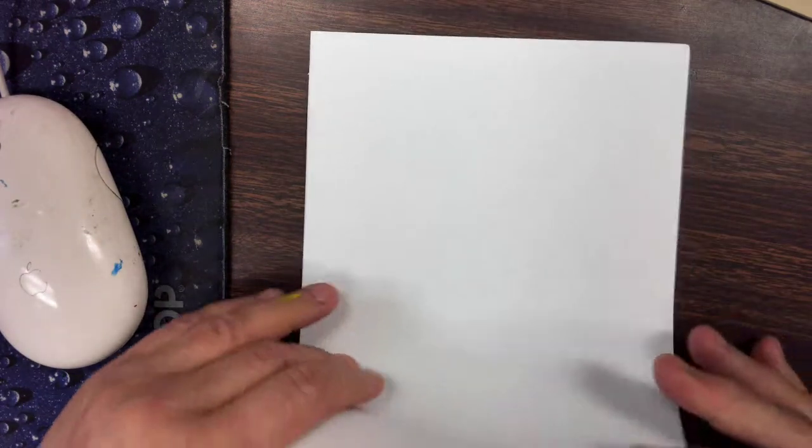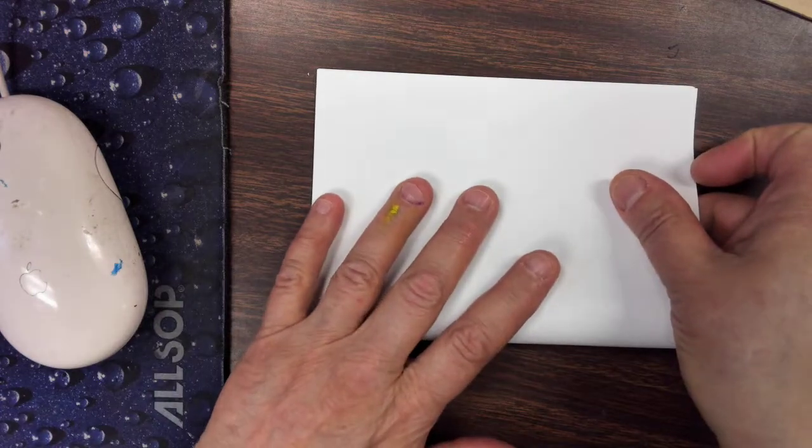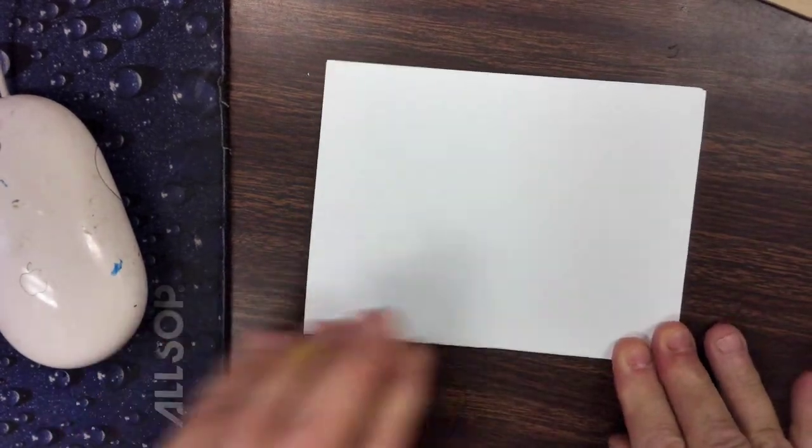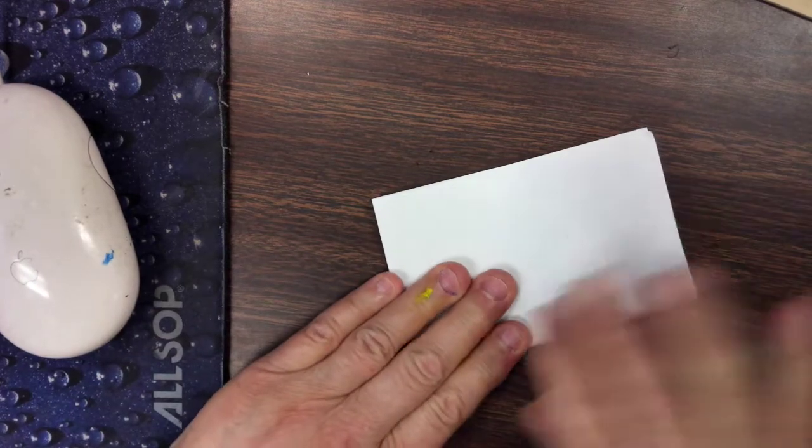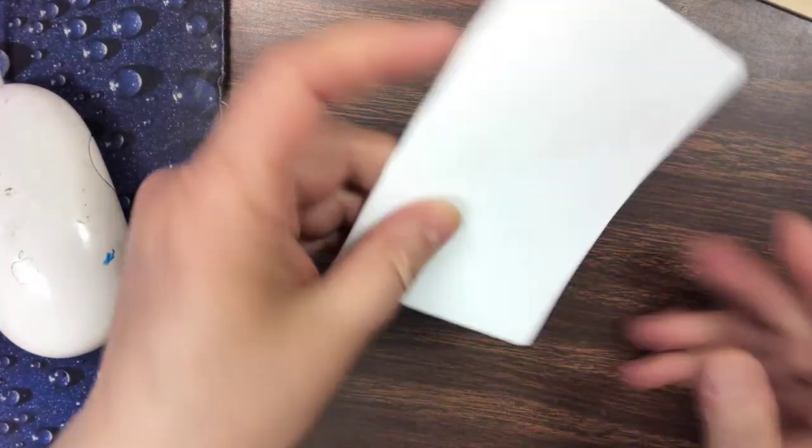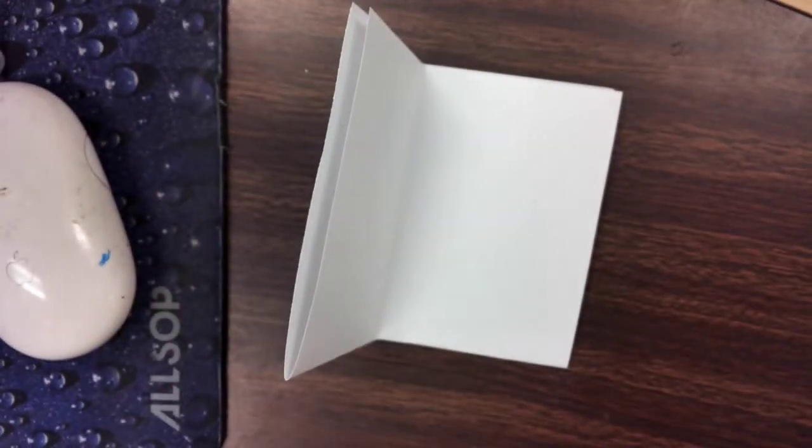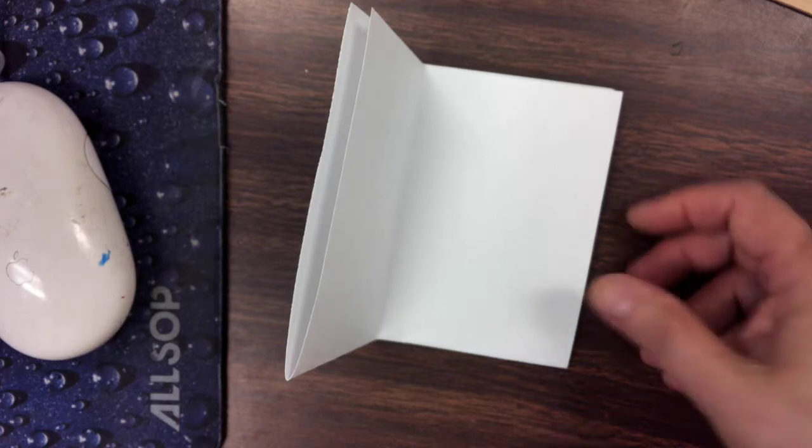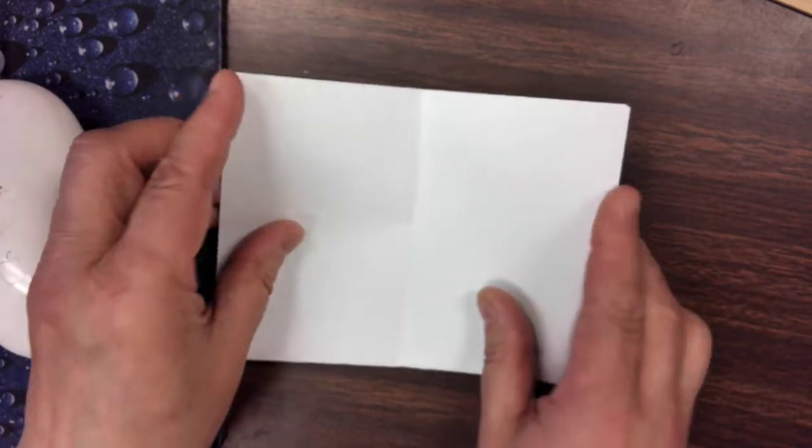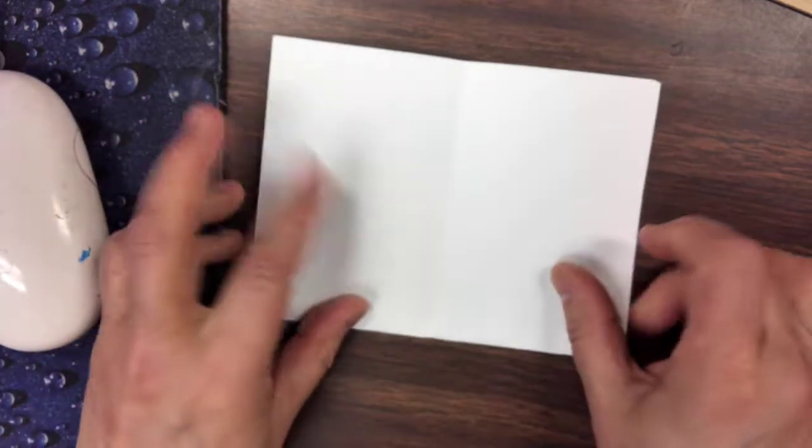Okay, what you want to do is take your paper and fold it once and fold it again so you end up with four sections. You took your paper, you folded it this way and this way, now you have four little sections.